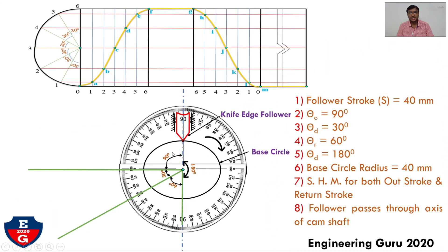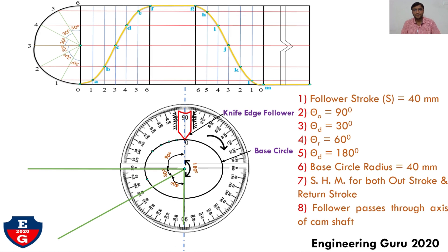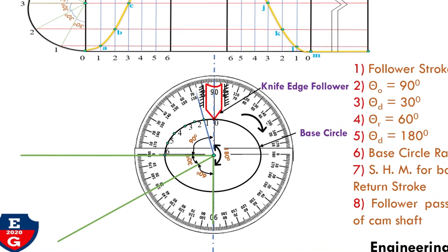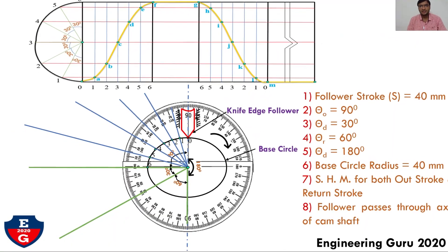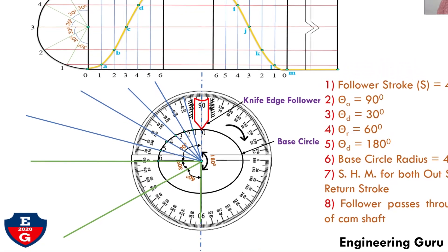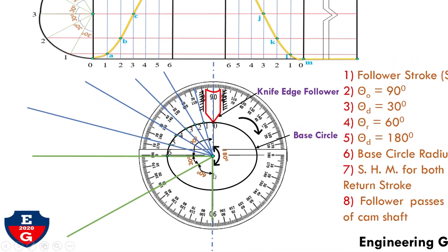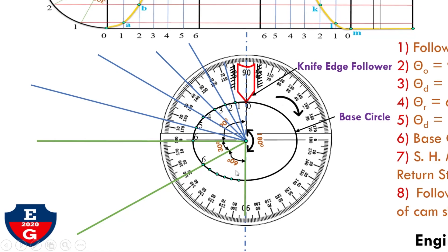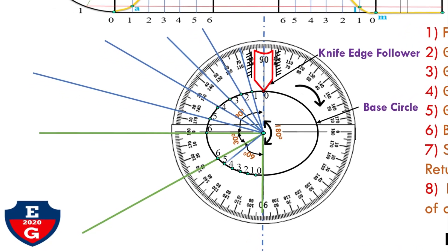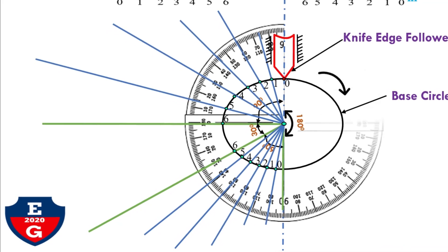First, divide the outstroke of 90 degrees into 6 equal parts using a protractor, each angle at 15 degrees, and give notation 0, 1, 2, 3, 4, 5 and 6 as marked in the displacement diagram. Similarly, divide the return stroke of 60 degrees into 6 equal parts, each angle at 10 degrees, and give notation 6, 5, 4, 3, 2, 1 and 0.